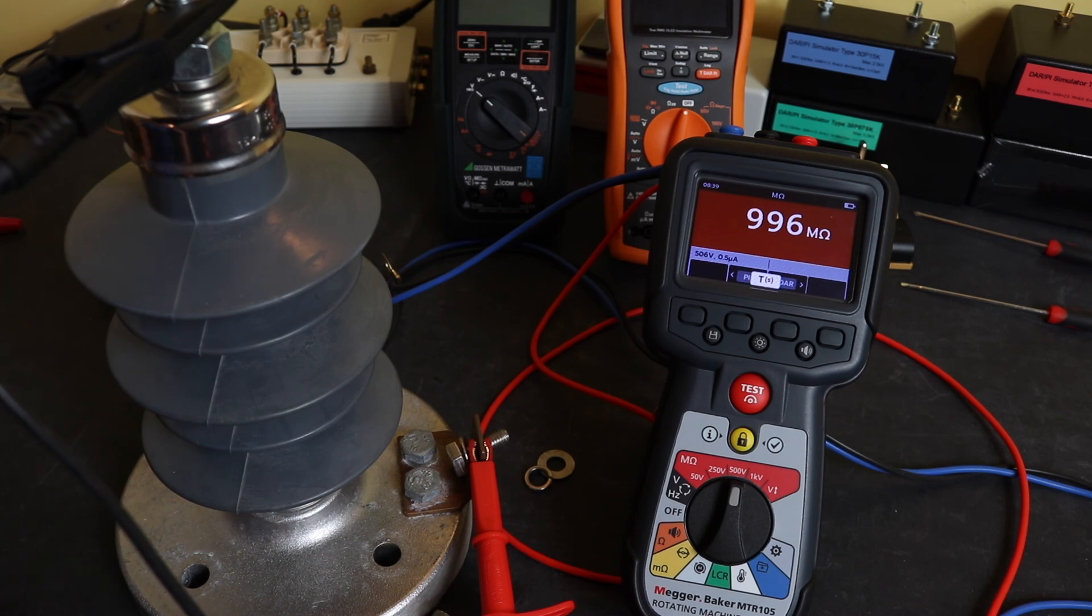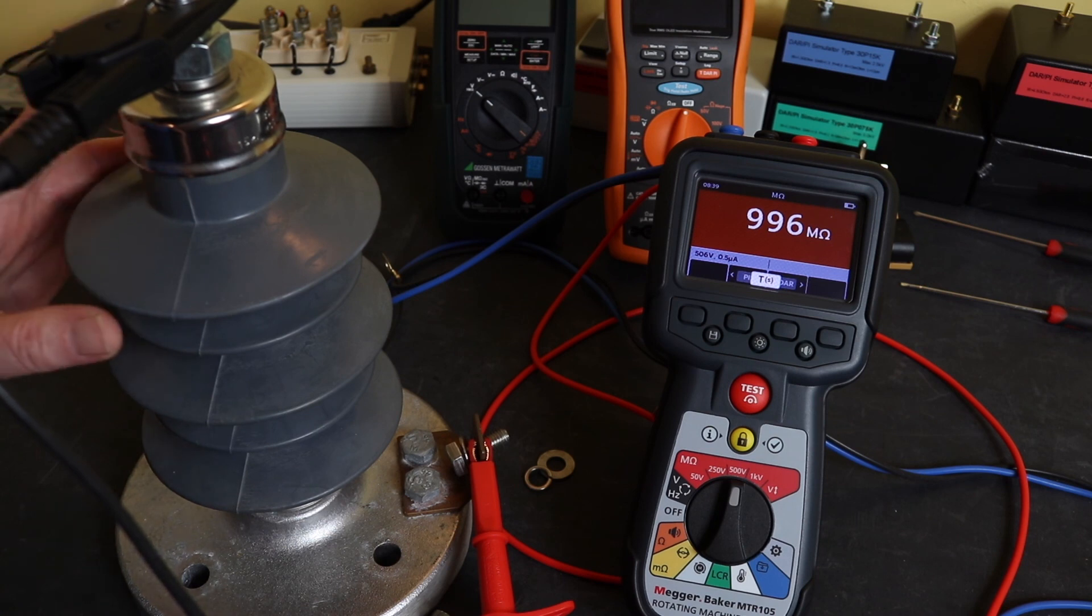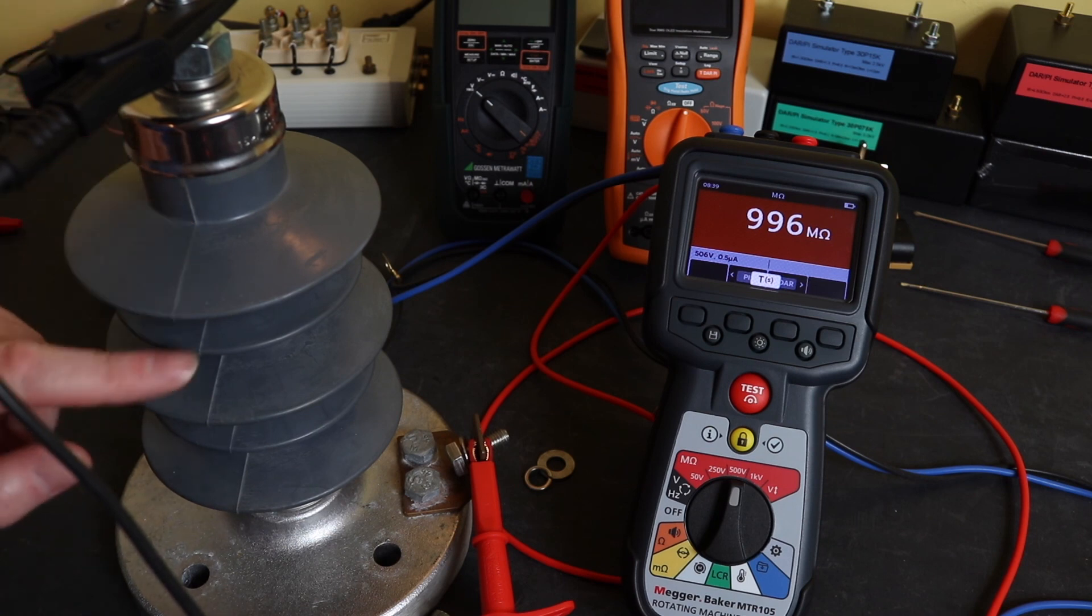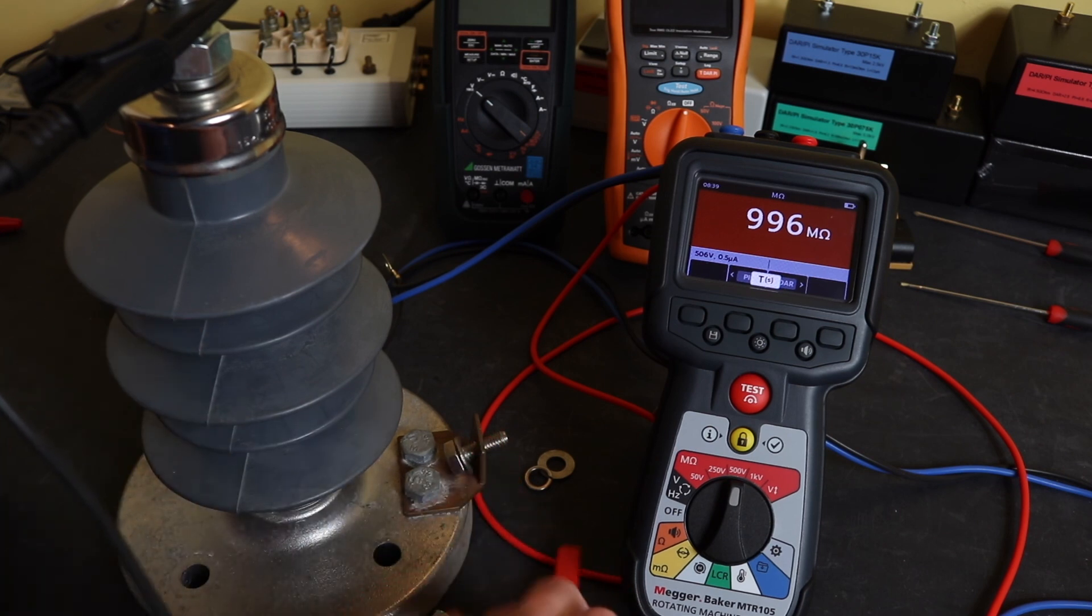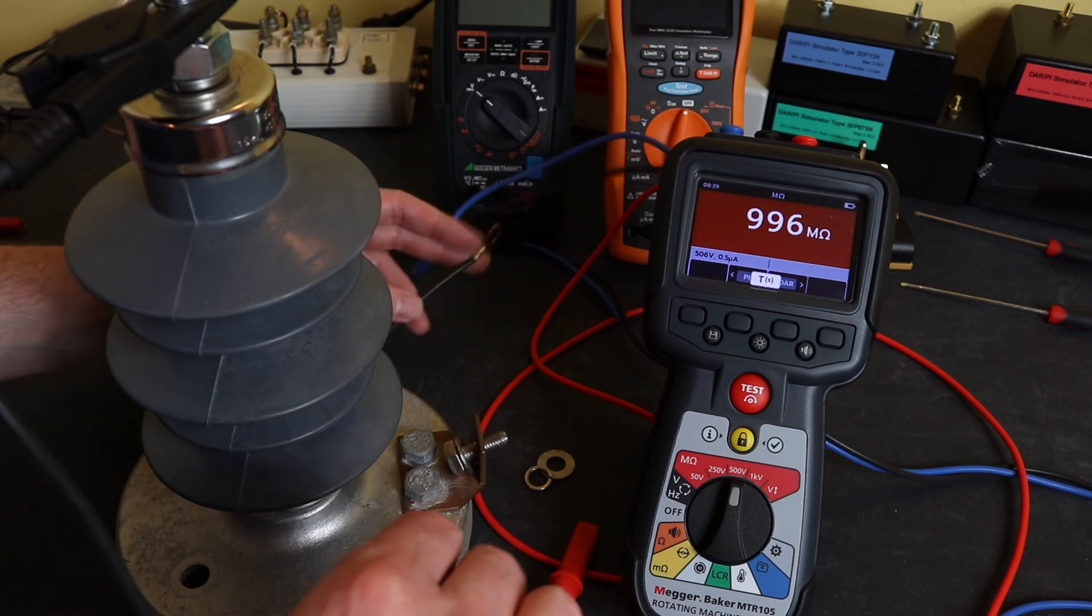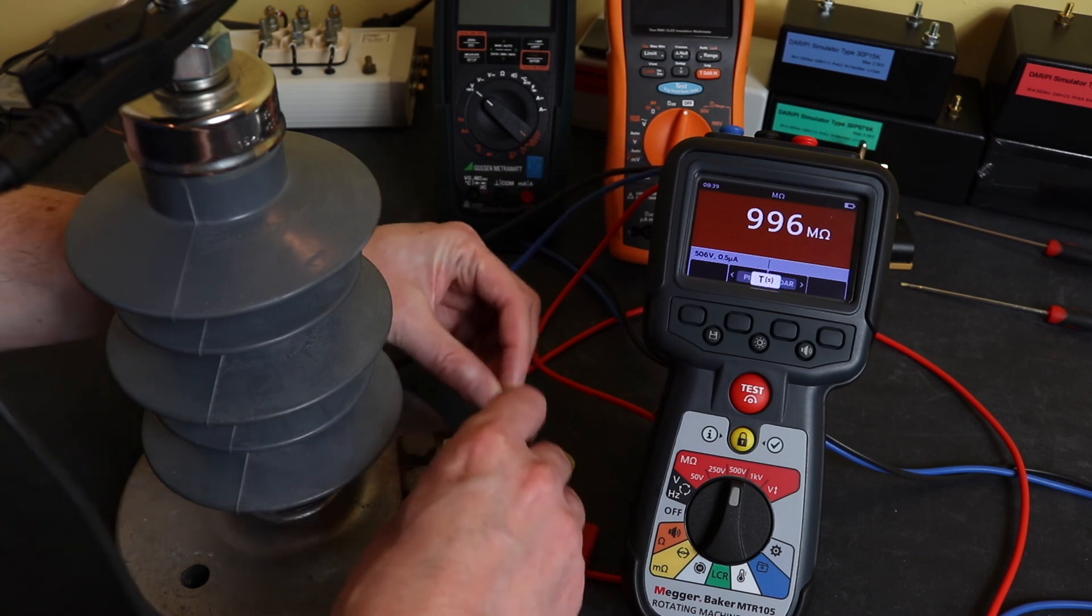That would be the reading of the circuit into earth. That's my final reading. Now with the bushing being in service over time, you'll get dust and dirt sit on the surfaces of the bushing and you will slowly develop leakage across the surface of this bushing down into earth.